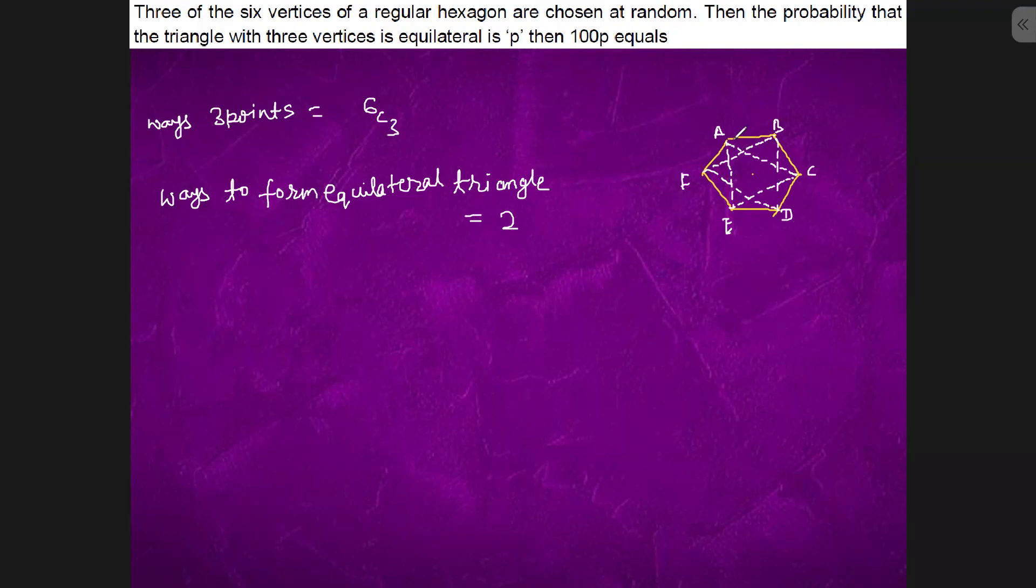So if we take A, we will have to take C and then we will have to take E. If we take B, we will have to take D, we will have to take F. So we don't have more than two options. So the probability of getting equilateral triangle is 2 upon 6C3.